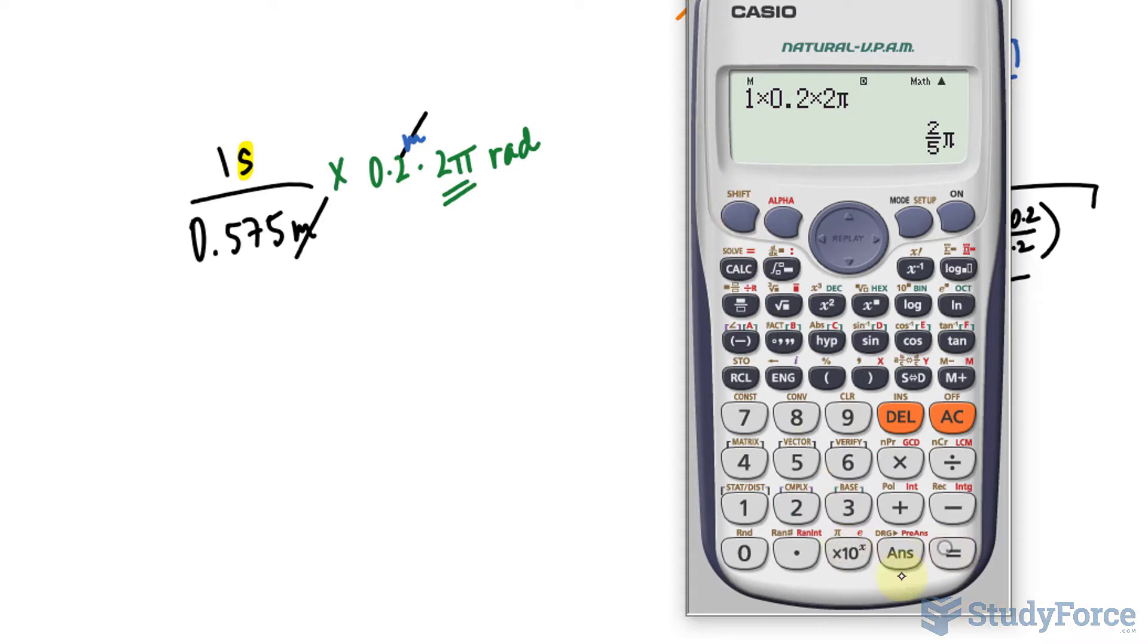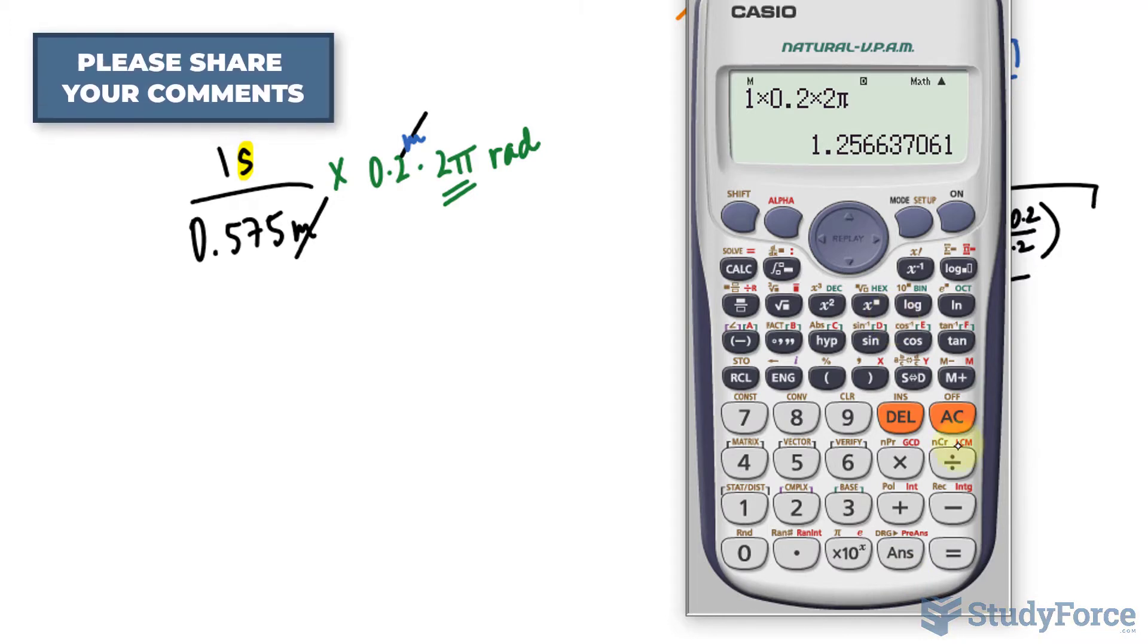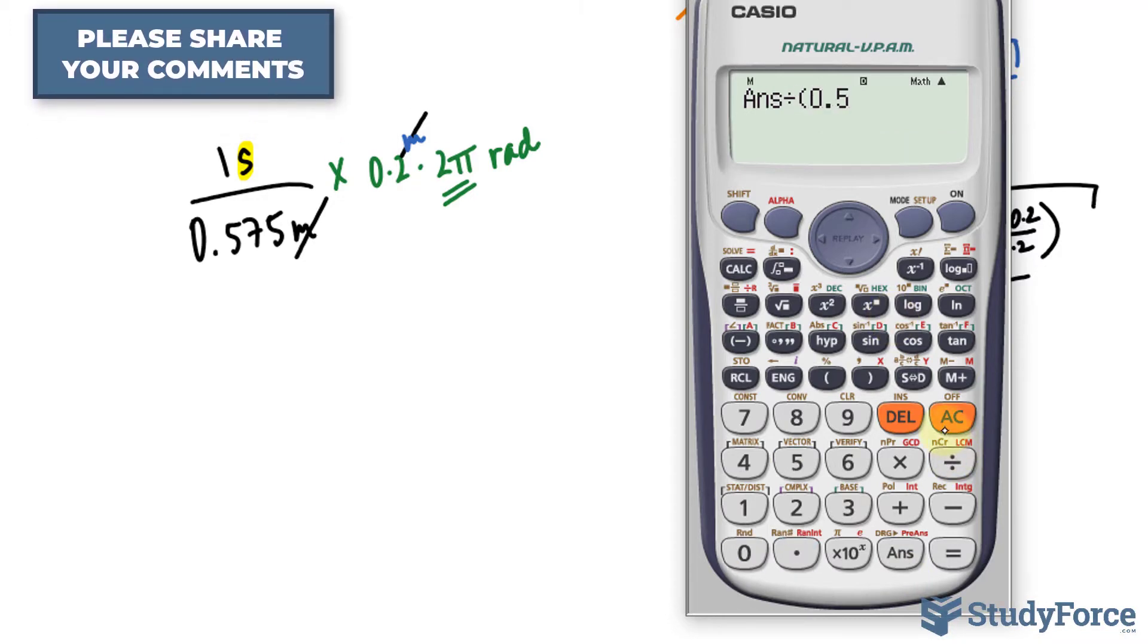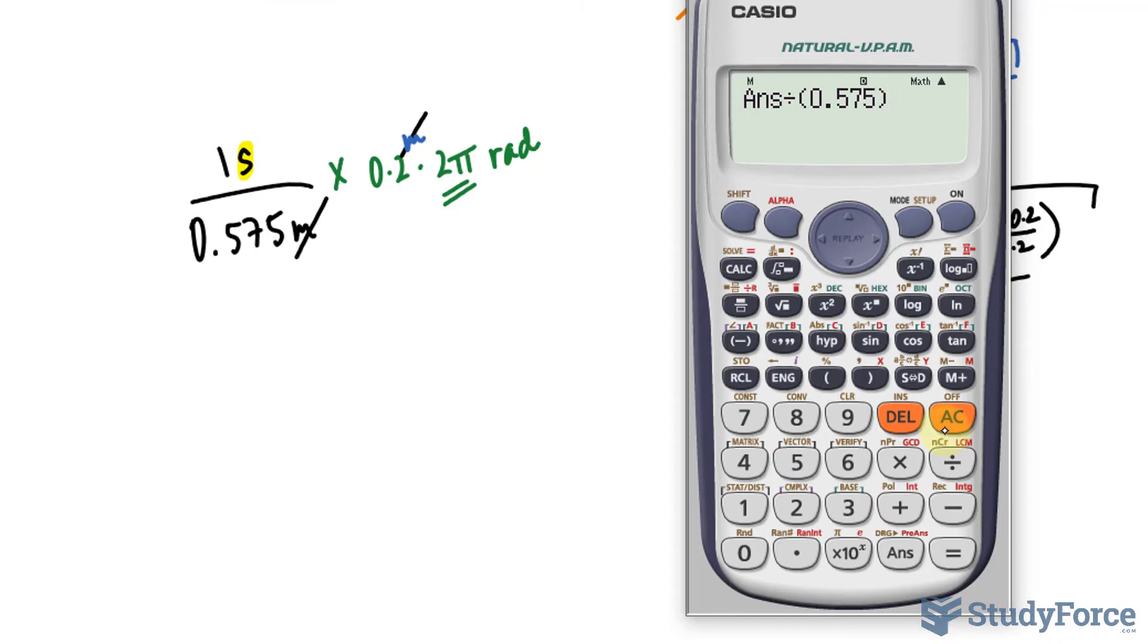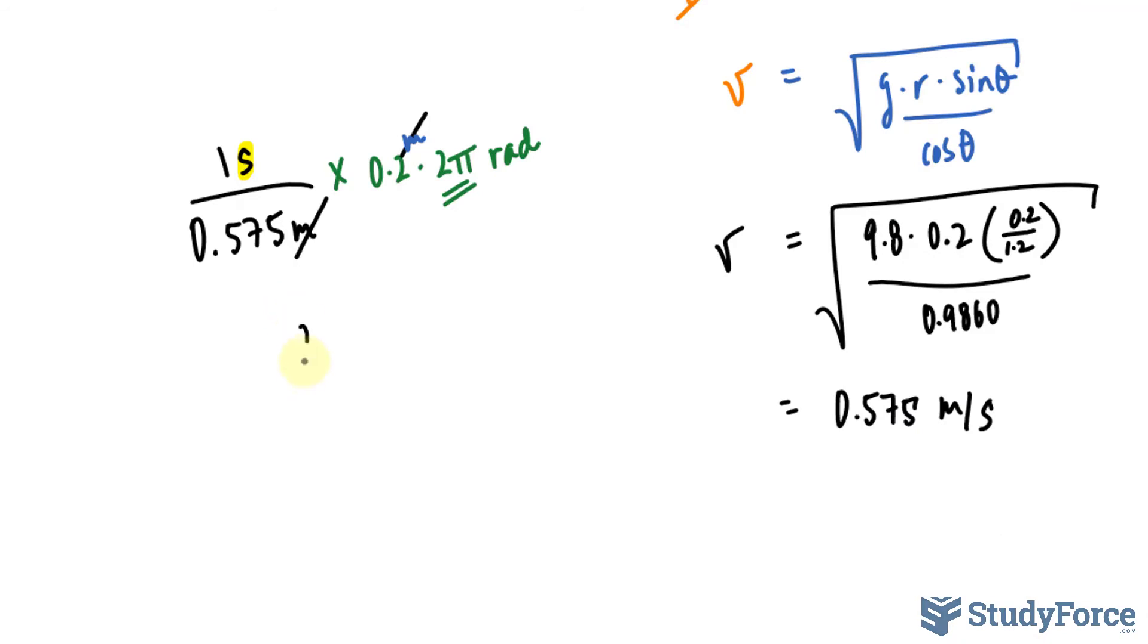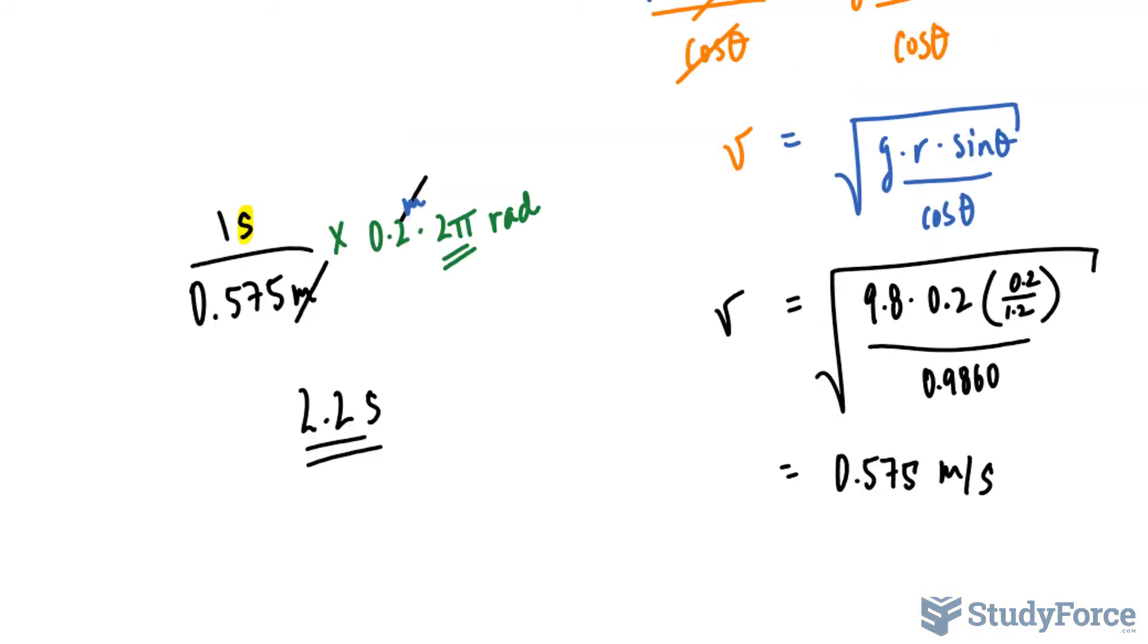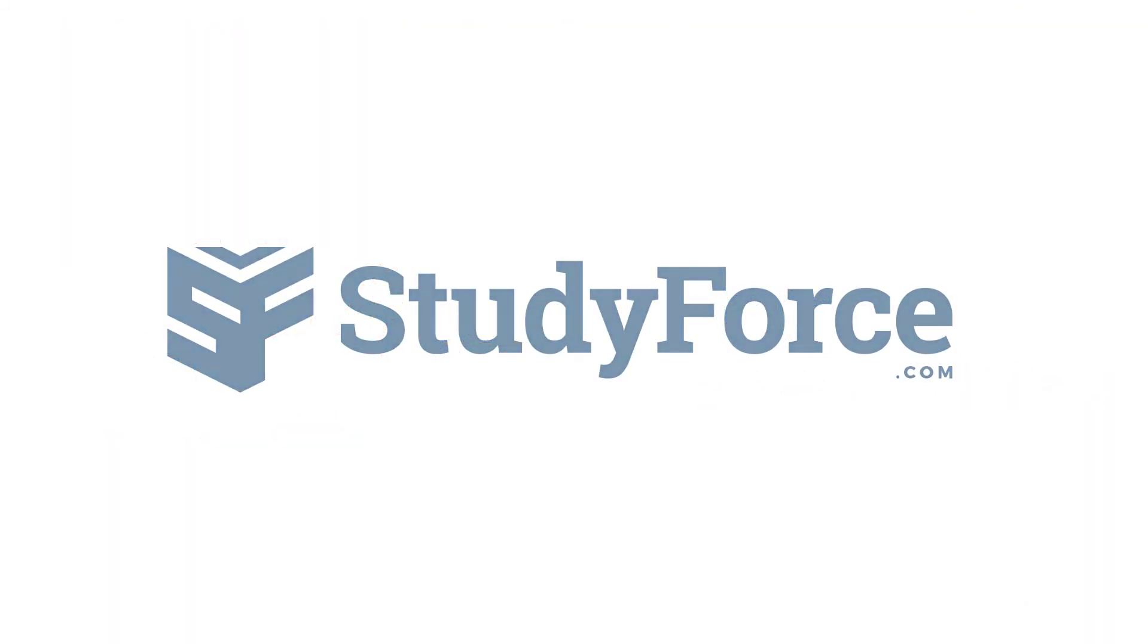And you should end up with this value, divided by 0.575. And we end up with 2.18, 2.2 seconds it takes for one period to occur. And so there you have it. That is how to find the period of a pendulum moving in a circle.